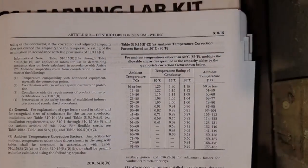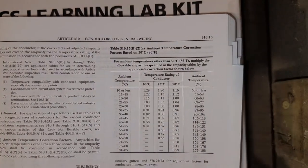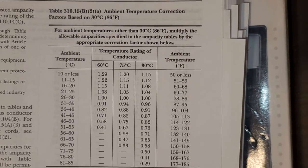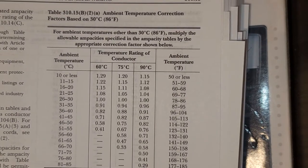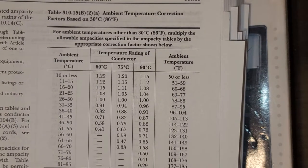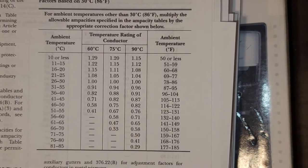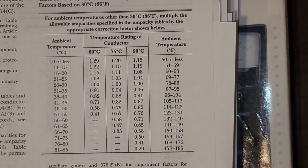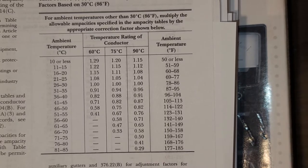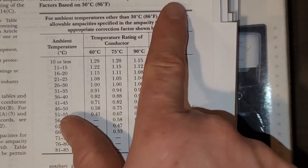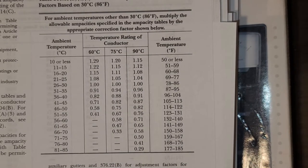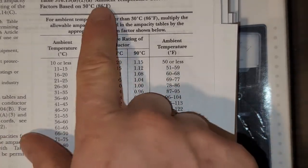The first table for this session is Table 310.15(B)(2)(a) — our ambient temperature correction table. Remember: temperature corrections and bundling adjustments. So on this one we're doing a temperature correction. The first thing it says is ambient temperature corrections based on 86 degrees Fahrenheit.